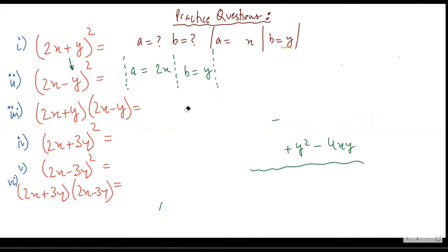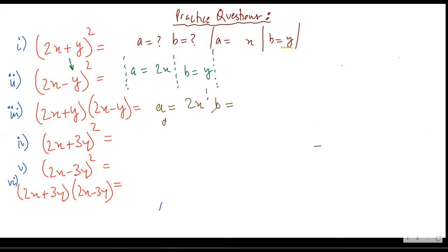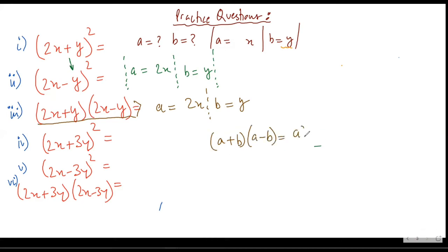In the third question, again I'll identify my a and b first. My a is 2x and my b is y. The identity I can use is (a + b)(a - b) = a² - b². So this would be equal to a² - b², which is (2x)² - y² = 4x² - y².